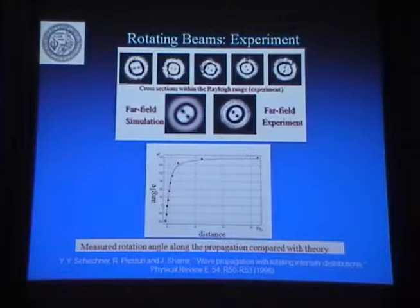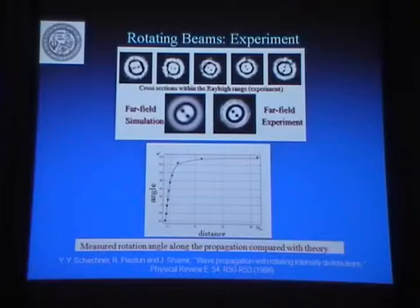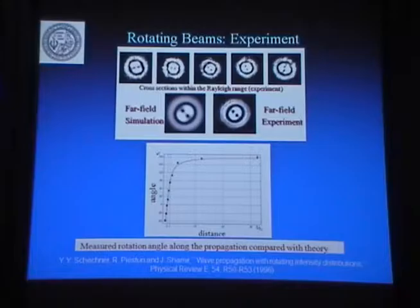We can control the total rotation from the waist to infinity. This is the first demonstration where we see this actually rotating through the waist and in the far field. We measure the angular rotation and this is the theoretical curve. As you can see, these things rotate a lot in the waist, and then towards the far field they become constant. So there's a strong rotation and then it becomes constant.